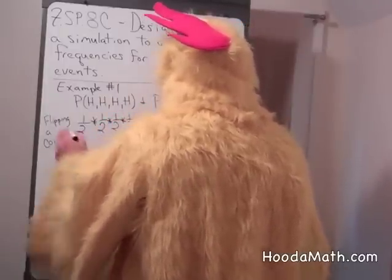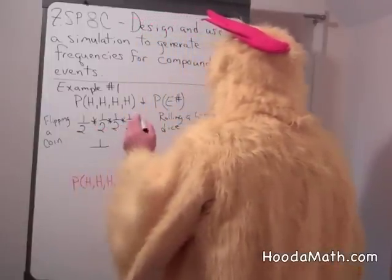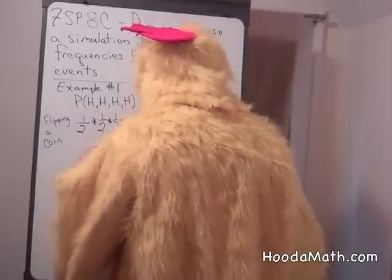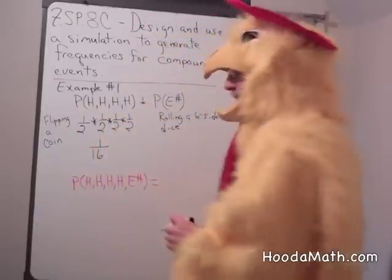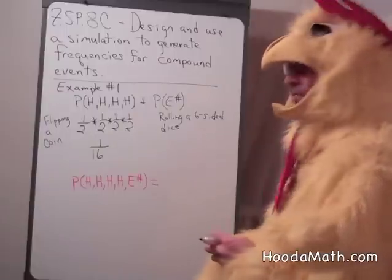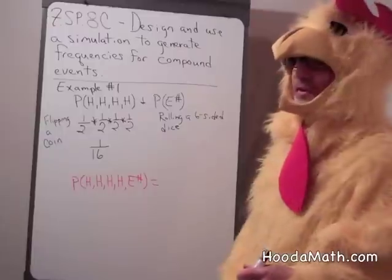The probability of getting four heads in a row is one over two times two, which is four, times two, which is eight, times two, which is sixteen. So there's a 1 in 16 chance of getting heads four times in a row. Not very likely.